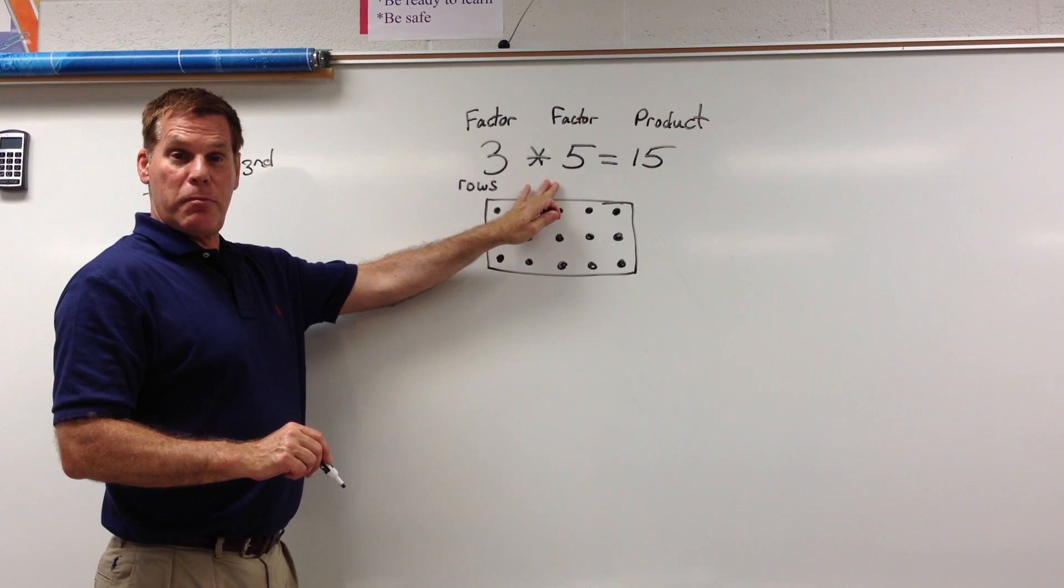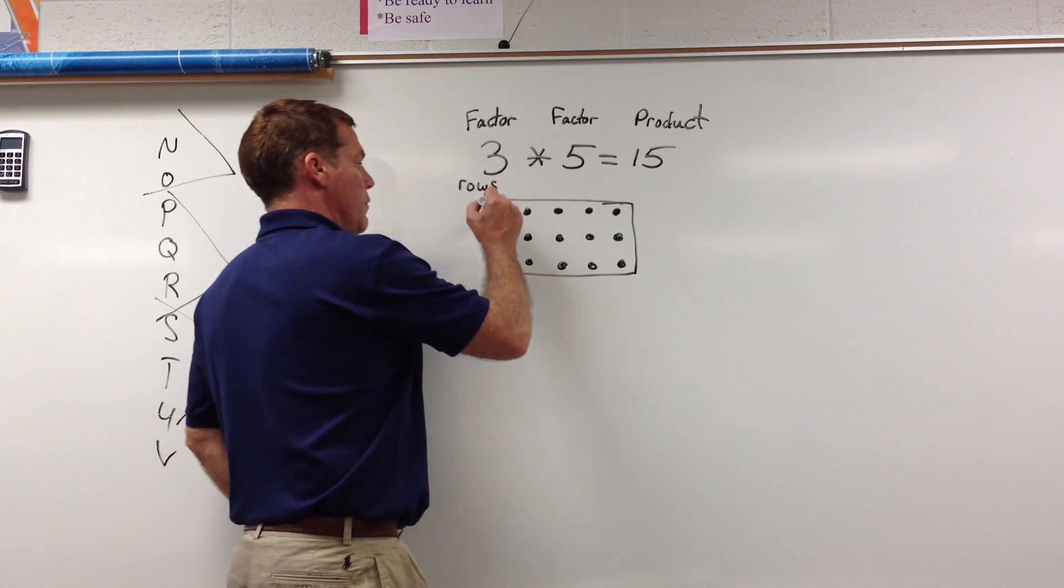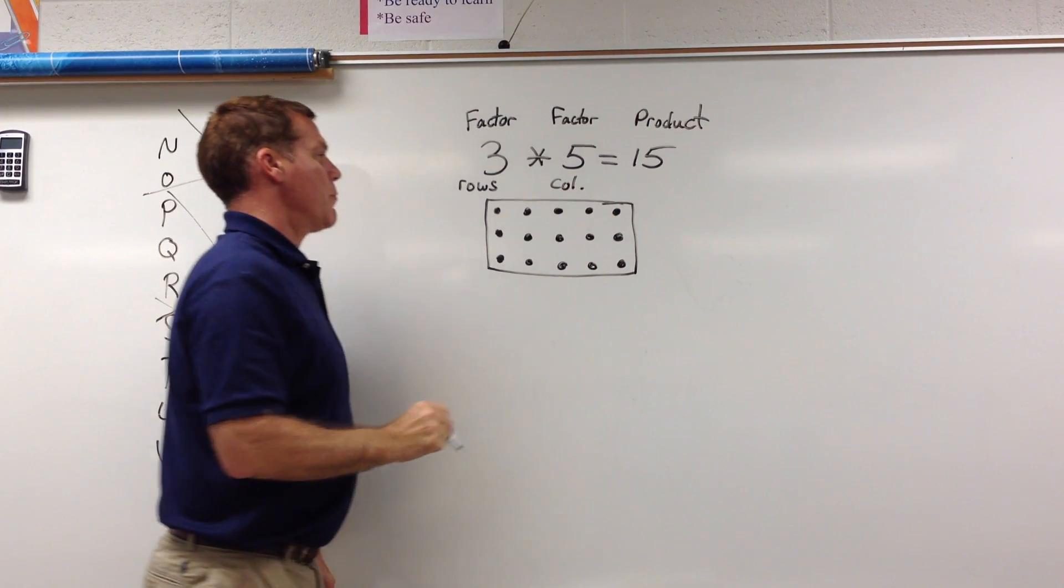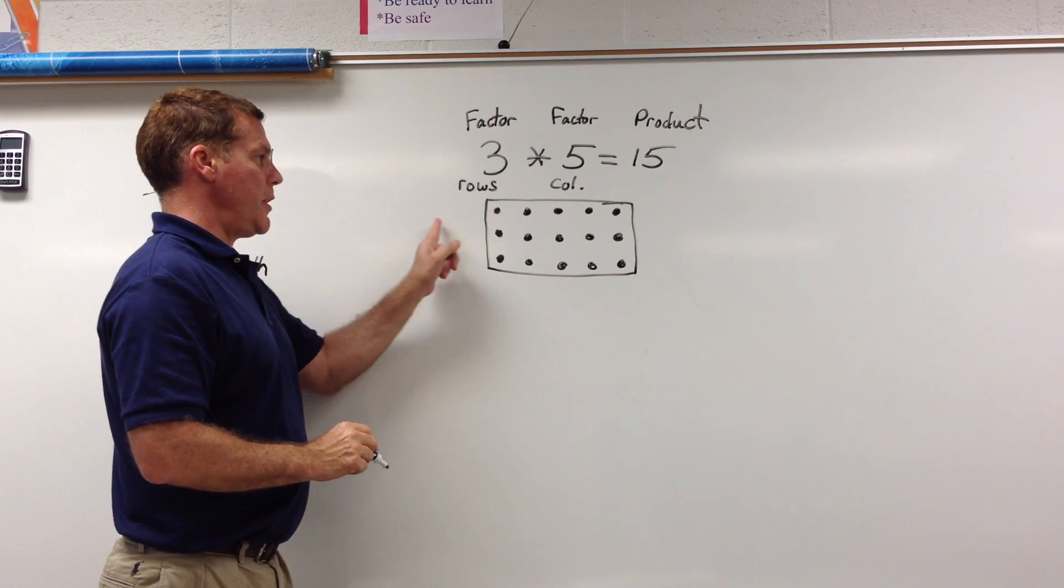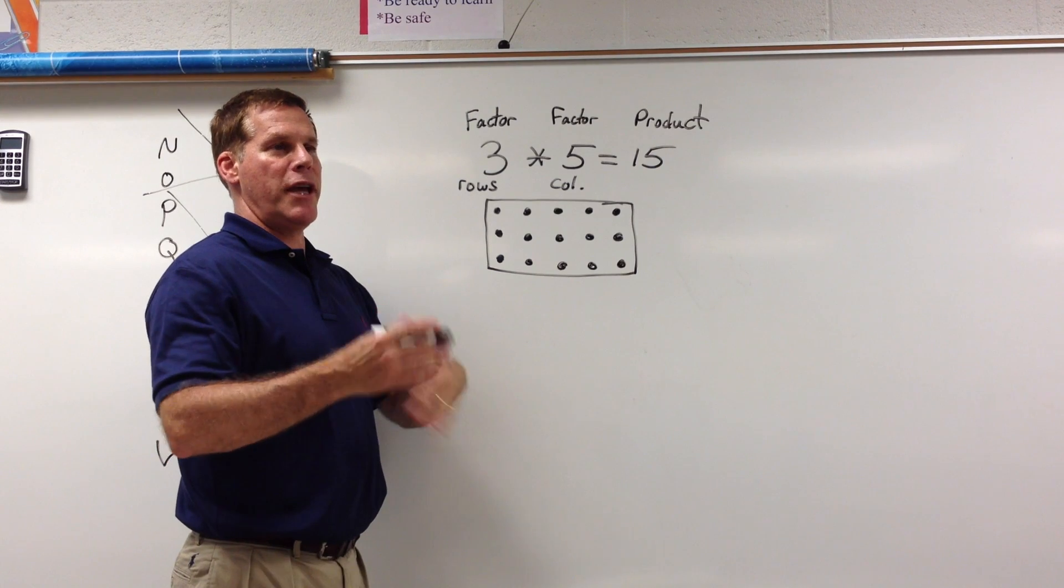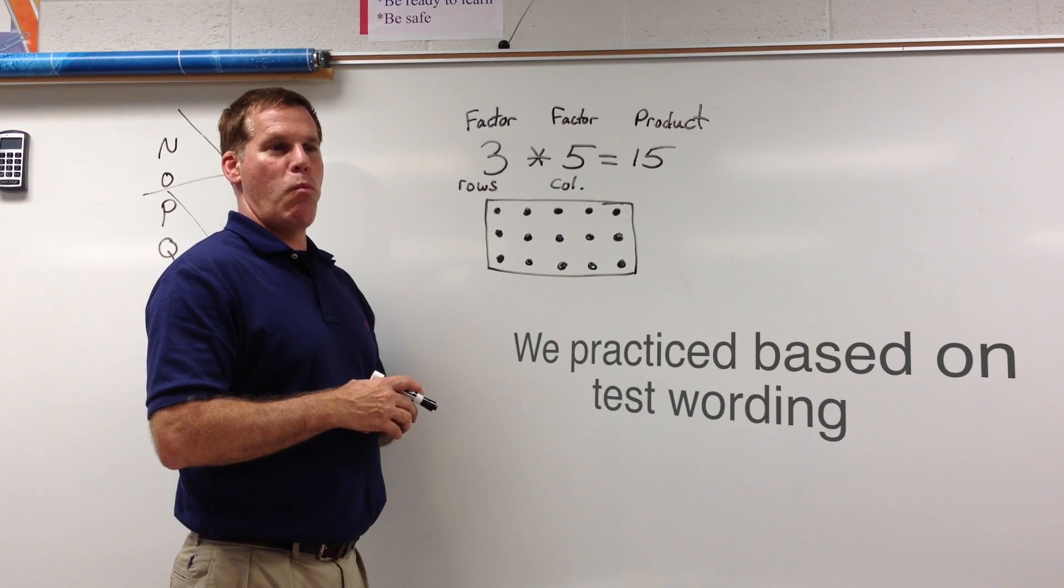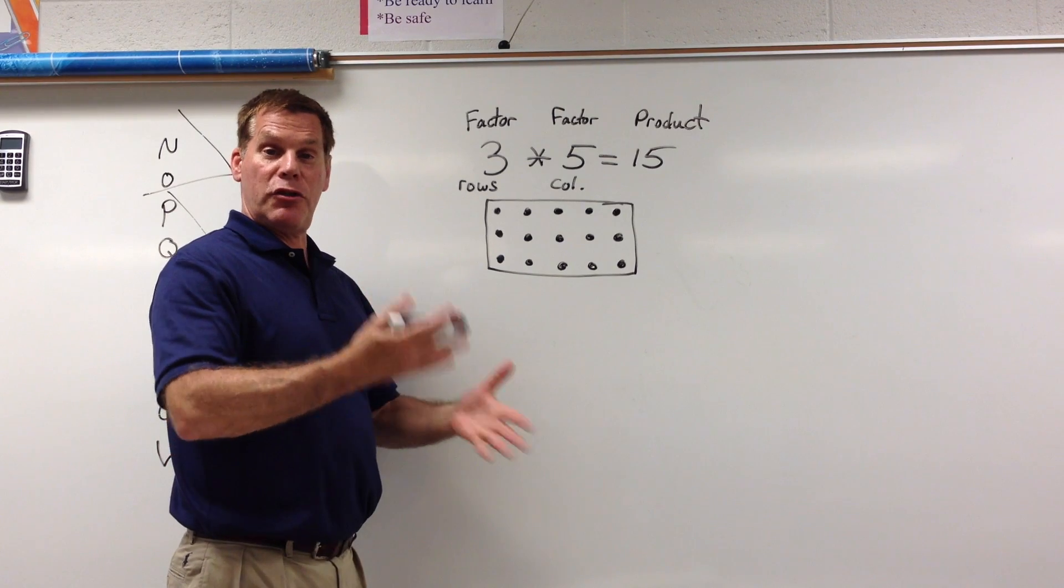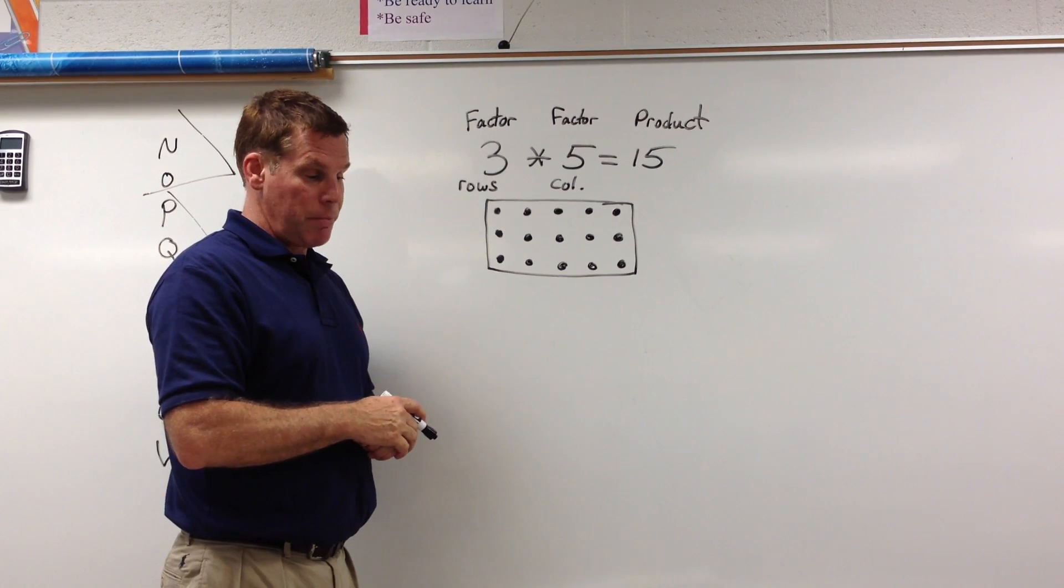Probably the biggest mistake students make when they're making these on a test is they reverse these by mistake. So we have three rows and we have five columns going up and down. I like to just say the first number goes up and down and the second number goes across. On a test, for example, they'll say you're going to plant some plants, you have 20 plants, you have to have at least four rows. Then the students have to determine using those 20 what the array is going to look like.